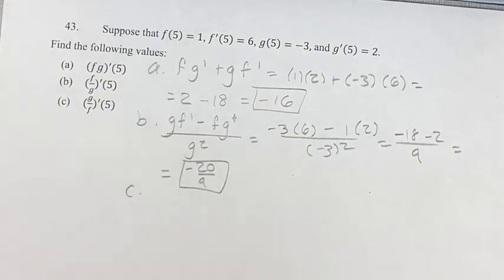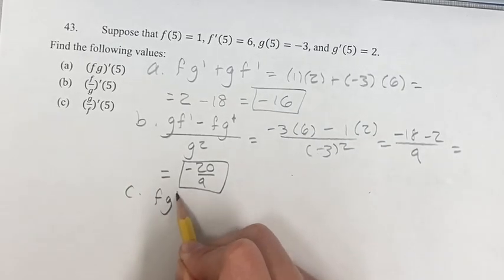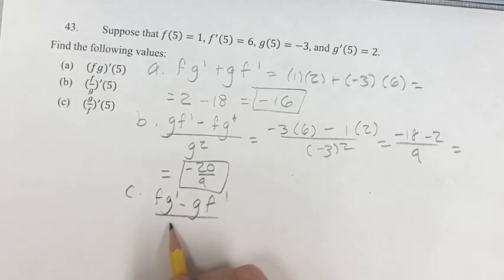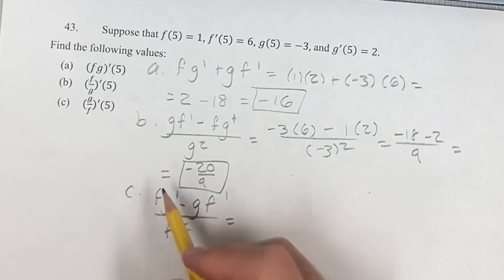Here, a similar thing, except the denominator and the numerator are flipped. So we have the denominator times the derivative of the numerator minus the numerator times the derivative of the denominator over the denominator squared. Similar thing, plug in.